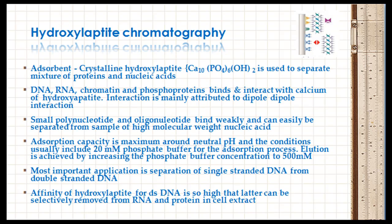Hydroxyapatite chromatography: crystalline hydroxyapatite, consisting of calcium, phosphate, and hydroxyl groups, is used as an adsorbent to separate mixtures of proteins and nucleic acids. A column of hydroxyapatite binds substances that interact with calcium — such as DNA, RNA, chromatin, and phosphoproteins — by dipole-dipole interaction.